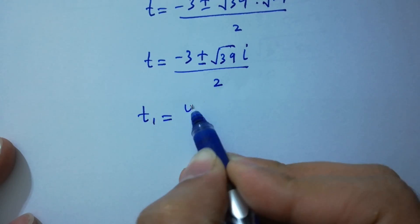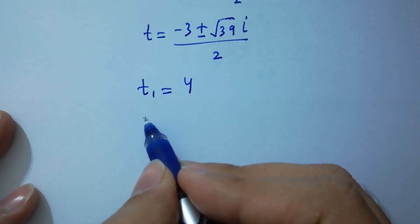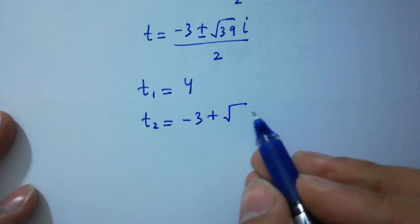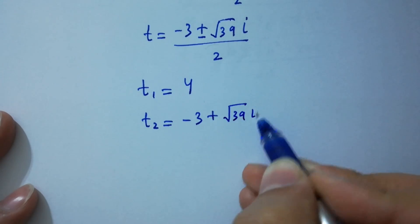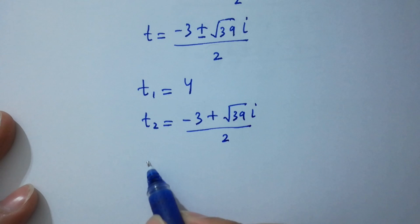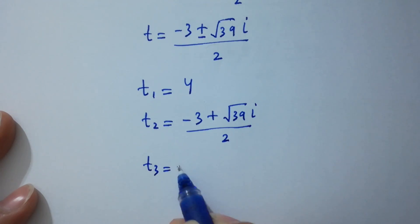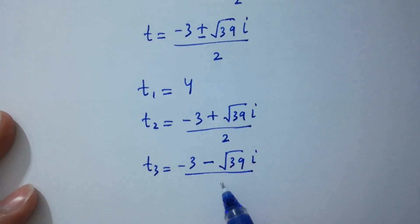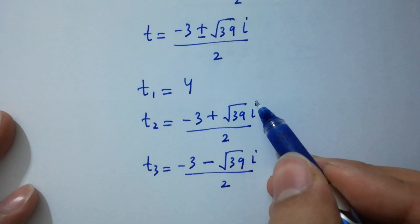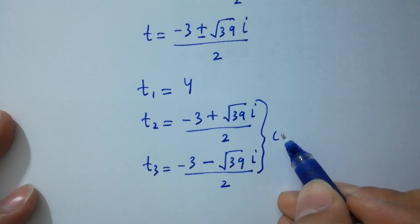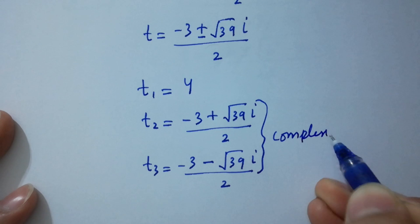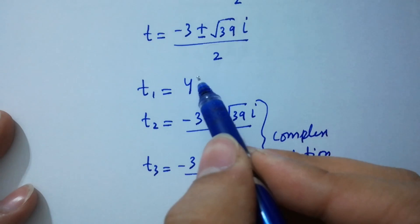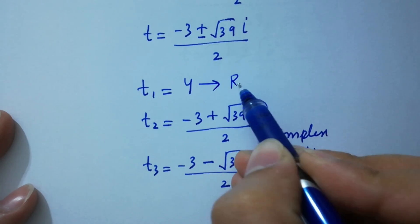So we have three solutions: t1 equals 4, t2 equals (minus 3 plus square root of 39 times i) over 2, and t3 equals (minus 3 minus square root of 39 times i) over 2. Here t2 and t3 are complex solutions, and t1 equals 4 is the real solution.